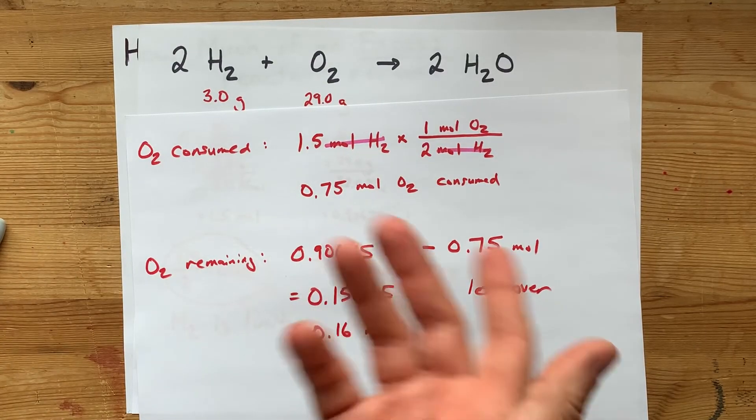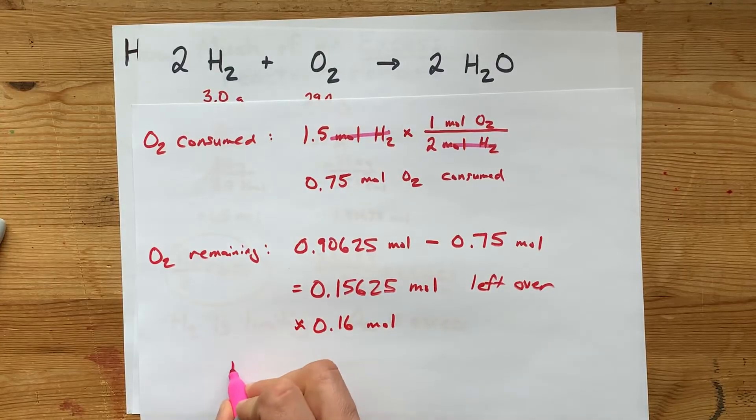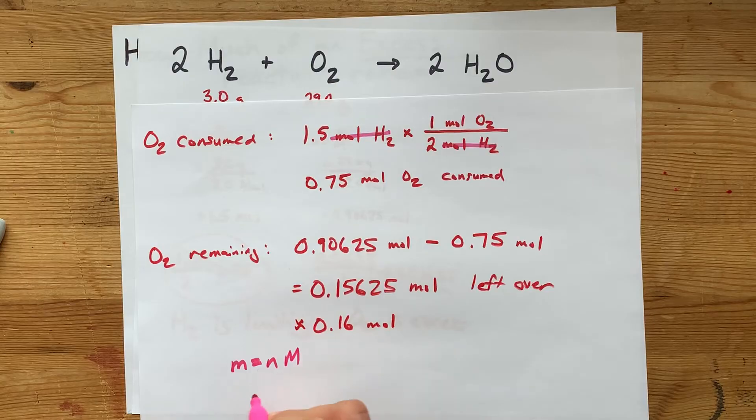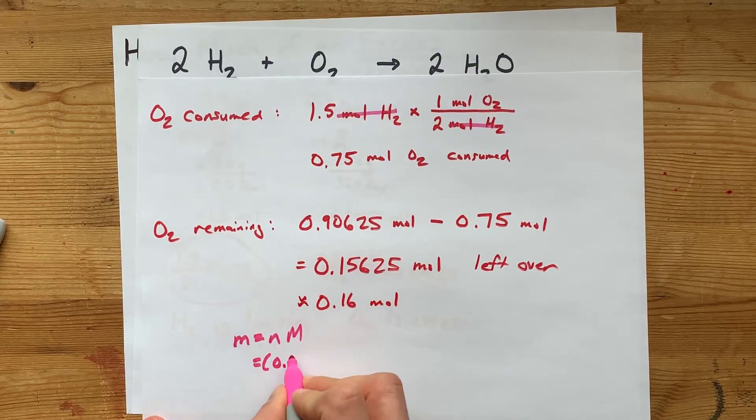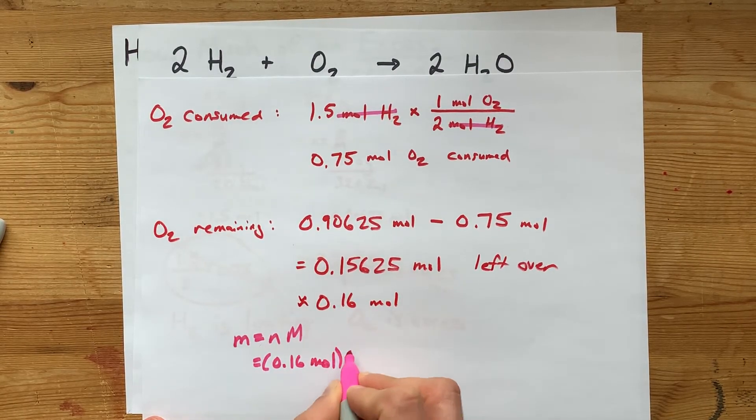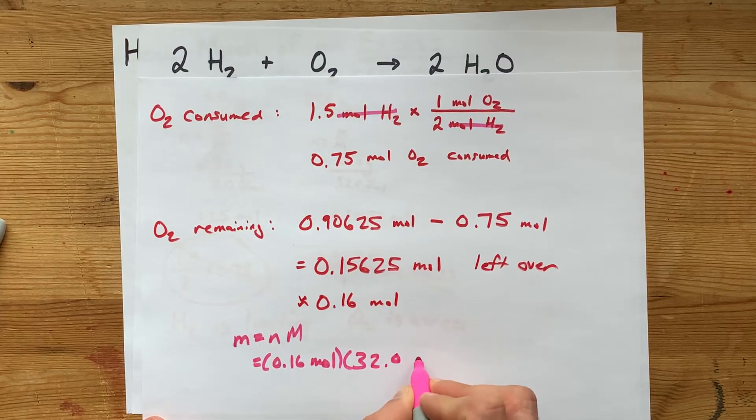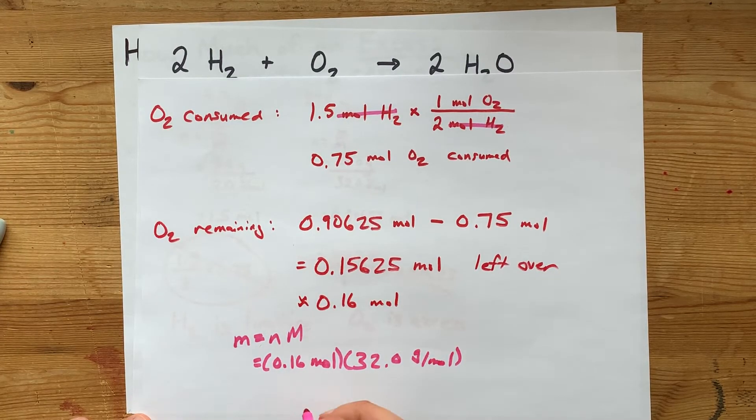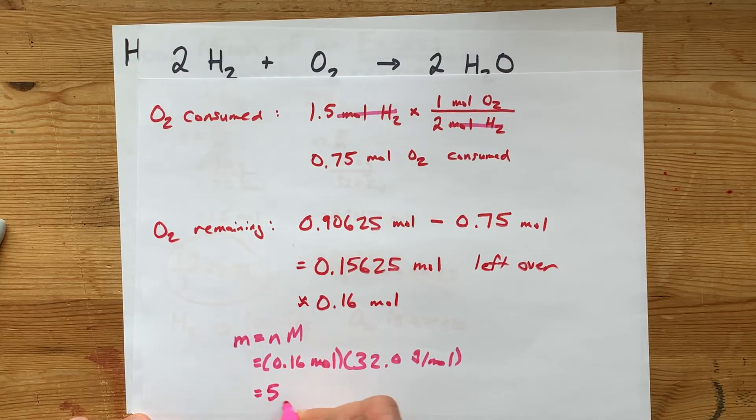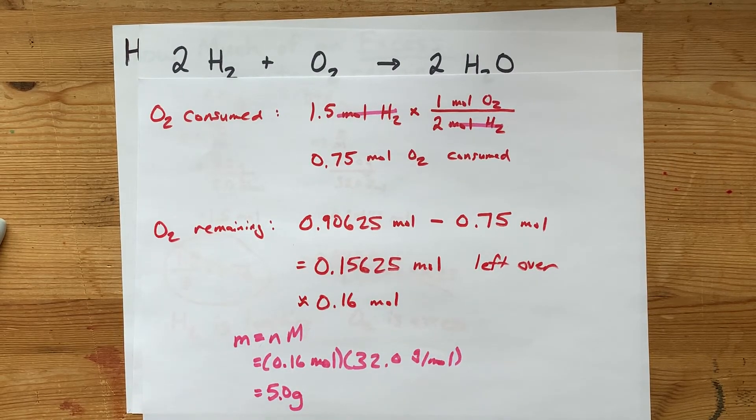And if you were asked for grams, you'd actually have to convert it to grams. Mass is moles times molar mass, 0.16 moles times, we already did 32 grams per mole. And when you do that on your calculator, I think you get exactly 5 grams, 5.0 with the right number of significant digits.